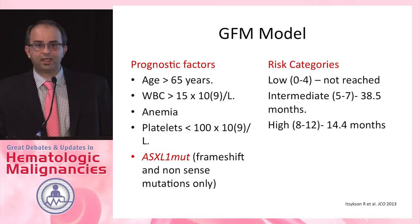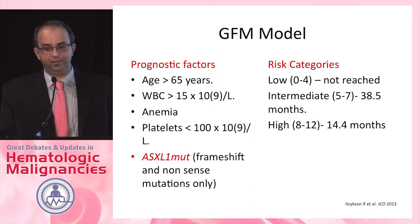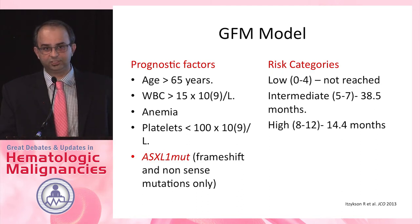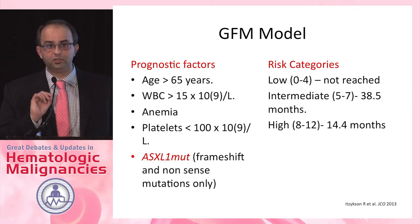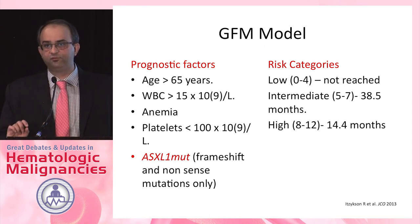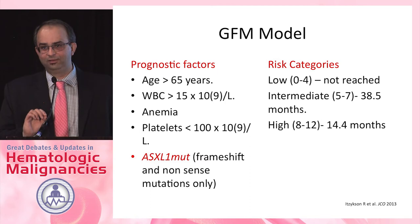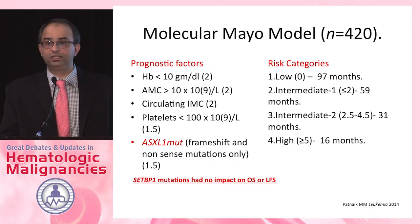The Groupe Francophone des Myélodysplasies — the French CMML group — was working on their own database and included only frameshift and nonsense ASXL1 mutations. They found that the missense mutations, which we had included in our prior model, did not alter the ASXL1 protein. As a result, they excluded them, and this was one of the first papers to show that ASXL1 adversely and independently impacts overall survival. This gave rise to the GFM model, which had three survival categories.